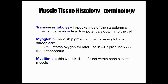A couple more terms — the next one is called transverse tubules, sometimes called T-tubules. These are extensions of the sarcolemma, or cell membrane, deep into the muscle cell itself. The sarcolemma has many ion channels, and just like ion channels in a neuron cause the action potential to propagate along the axon, these transverse tubules allow action potentials to go into the cell much more rapidly, allowing the muscle to contract more in rhythm and more rapidly.